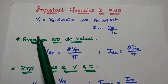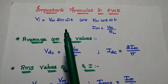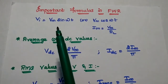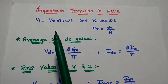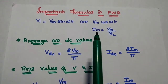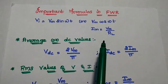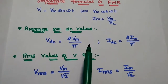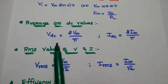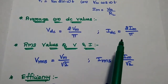Here the AC input signal is represented as Vm sin(ωt) or Vm cos(ωt), where Vm represents the maximum voltage of the AC input signal. Similarly, the maximum current Im is equal to Vm divided by RL. The average DC values: Vdc is equal to 2Vm by π, and Idc is equal to 2Im by π.